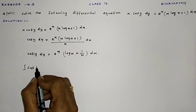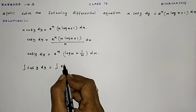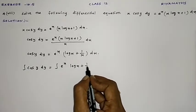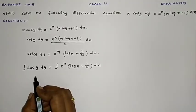Integral of cos y dy = integral of e^x (log x + 1/x) dx. So this is the basic formula.